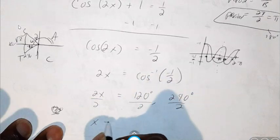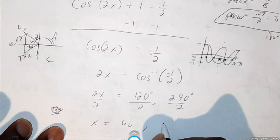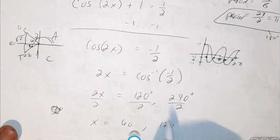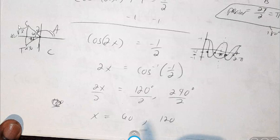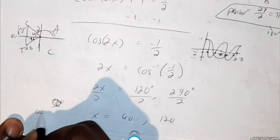And that would give me X equals 60, X equals 120. So again, we're finding X, not just the entire angle. So if that's true, I'm going to take my 60 degrees and add 180 to it.